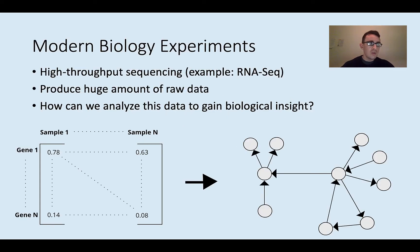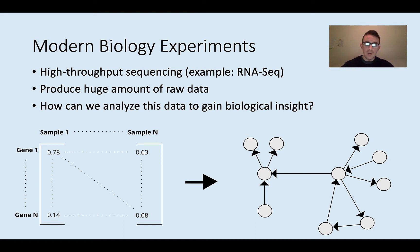Before we can really understand the purpose of these fields and what is meant by bioinformatics and computational biology, I need to tell you a bit about modern biology experiments. With technology these days, a lot of biology experiments involve what's called high-throughput sequencing. Basically, high-throughput sequencing is an experiment that sequences a large amount of genetic material, meaning RNA or DNA.